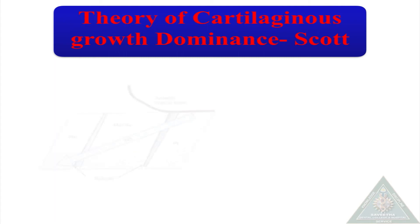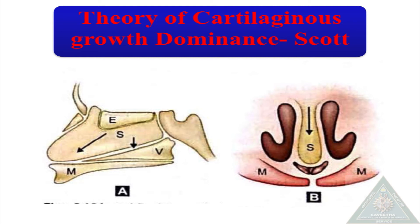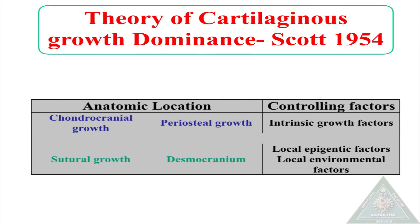The cartilaginous theory by Scott states that cartilages have intrinsic growth potential and are therefore primary growth centers. Growth of cartilage in the nasal septum provides force to displace the maxilla in the downward and forward direction; suture growth is passive and only secondary to cartilaginous growth. The nasal septum is a major contributor to maxillary growth. For the mandible, the condylar cartilage is considered the growth center. The chondrocranium and periosteum are primary growth centers controlled by intrinsic genetic factors, whereas suture growth and desmocranial growth are controlled by local epigenetic or environmental factors.